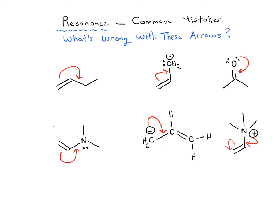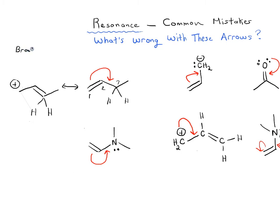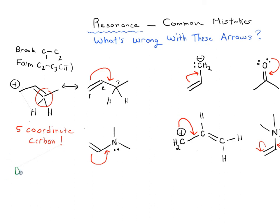What is this arrow telling us to do? This arrow tells us to break the double bond between C1 and C2 and form a new pi bond between C2 and C3. What would that mean? We would end up with a five-coordinate carbon — a Texas carbon. Obviously we don't want to break the octet rule, so that's why this arrow is not legitimate.